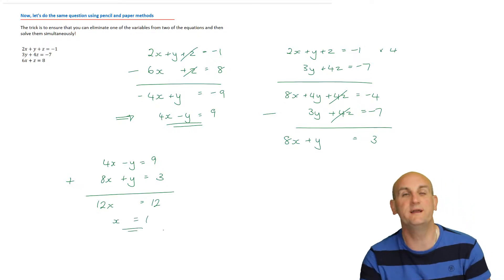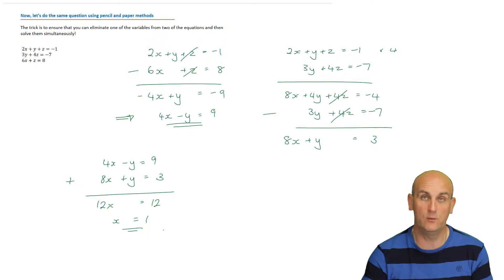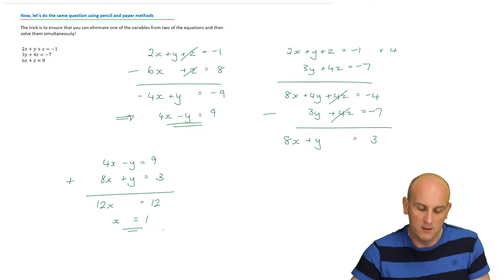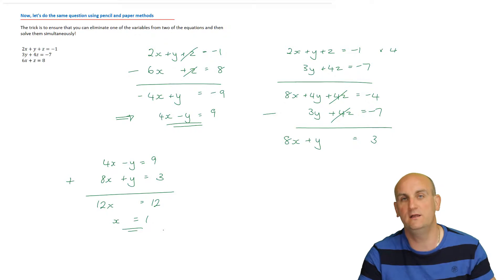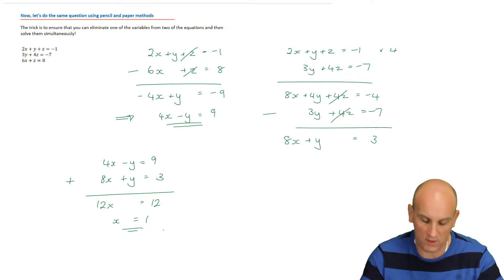Writing them out again, I get 4x minus y equals 9 and 8x plus y equals 3. A minus and a plus - the y's are the thing I'm going to eliminate. A minus and a plus would normally be a minus, so I'm going to add these two together, which gives me 12x equals 12, and so x equals 1. Now a word of advice: when you're doing this, you want to come down the page. I can't because I'm limited by screen real estate. I've got my x value as 1. Am I finished? No.